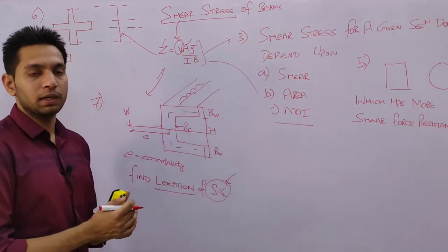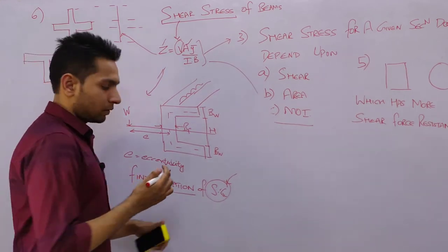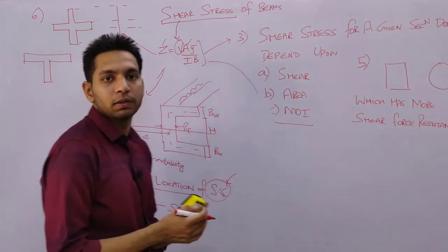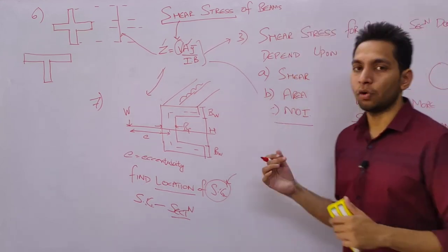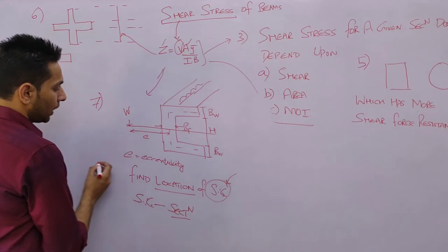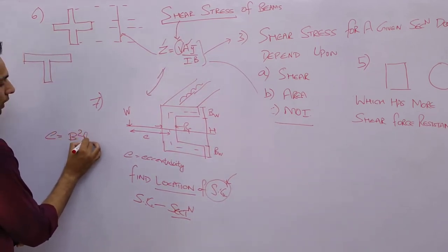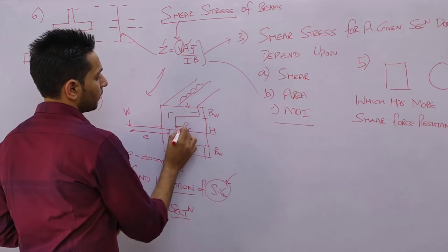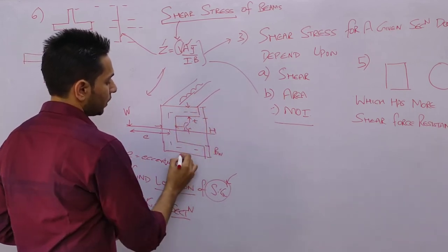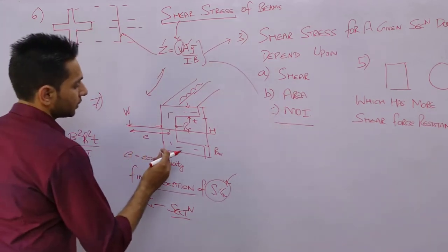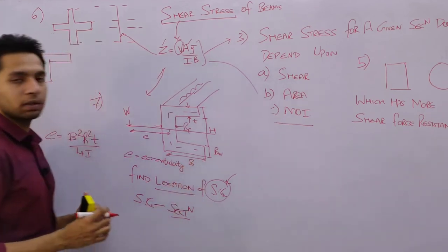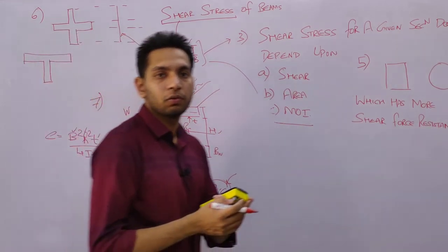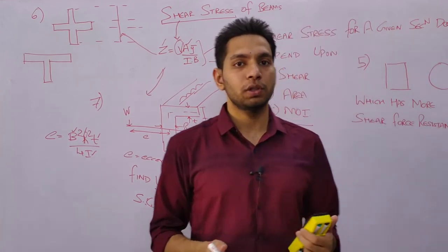The shear center is a property of the section, not of the loading — keep that in mind. For a channel section, the formula to calculate eccentricity e is: e = B²h²t / (4I), where t is the flange thickness, B is the flange width, h is the section height, and I is the moment of inertia. Based on these values you can calculate your e value.